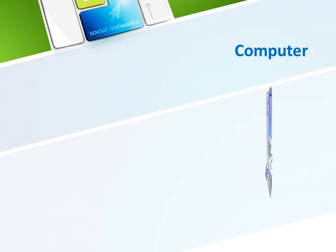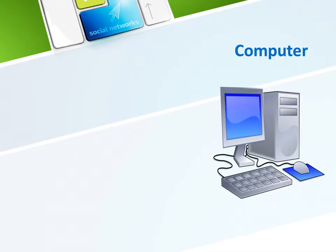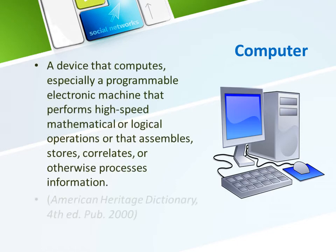In the Educational Technology Course 1, the role of computer in education was well discussed. However, we will try to take a look at what computer is all about from the American Heritage Dictionary. A computer is a device that computes, especially a programmable electronic machine that performs high-speed mathematical or logical operations, or that assembles, stores, correlates, or otherwise processes information.